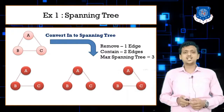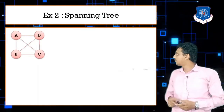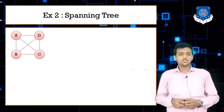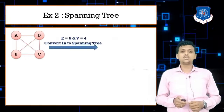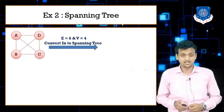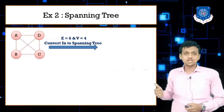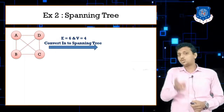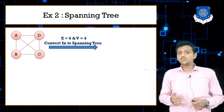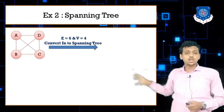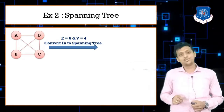Now let us take a look at another example of how to make a spanning tree. Here we have 4 nodes and 6 edges, so V equals 4 and E equals 6. How many spanning trees can be made from this? V raised to V minus 2, that means 4 raised to 4 minus 2, which becomes 16. So from this particular graph you can make a total of 16 spanning trees.